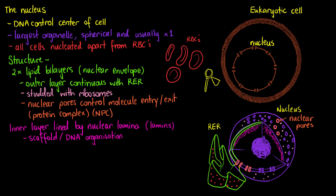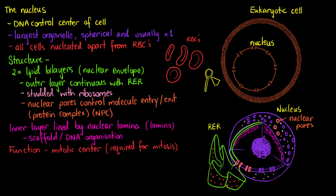Now that we know the structure of our nucleus, we can begin to talk about the function. One of the functions of our nucleus is being the mitotic centre — meaning it's where we house our DNA. Without the nucleus, we can't go through mitosis. So if a cell is anucleate, like a red blood cell, it can't go through mitosis and therefore can't reproduce.